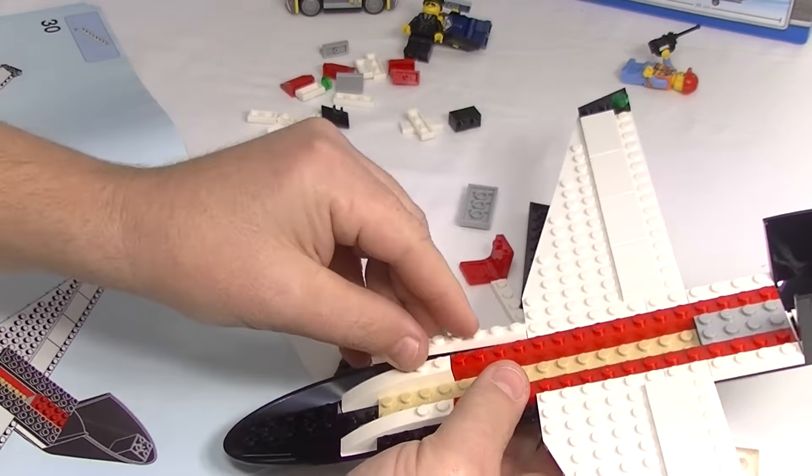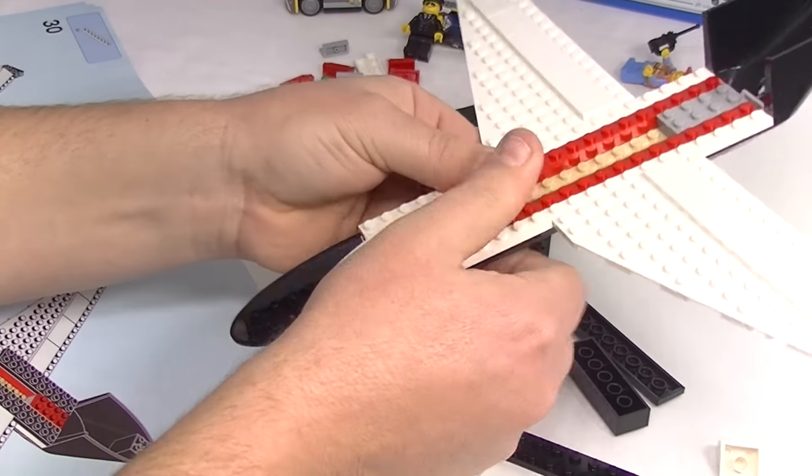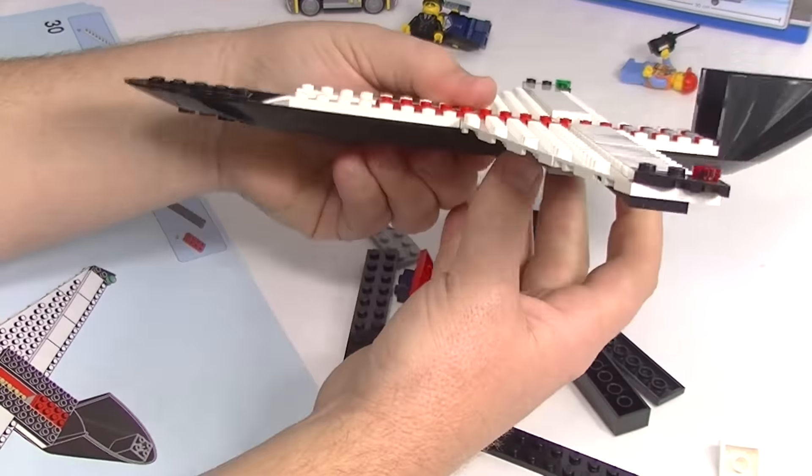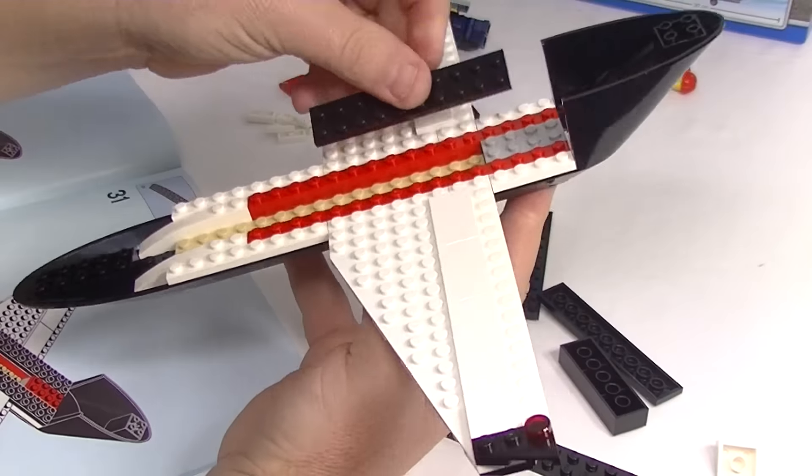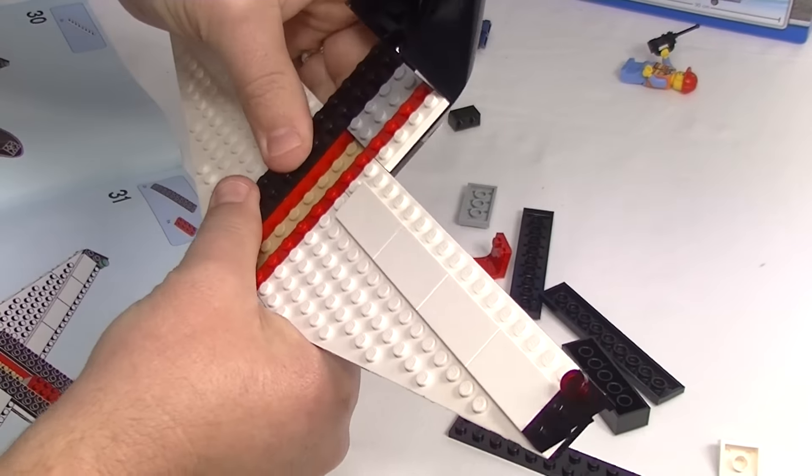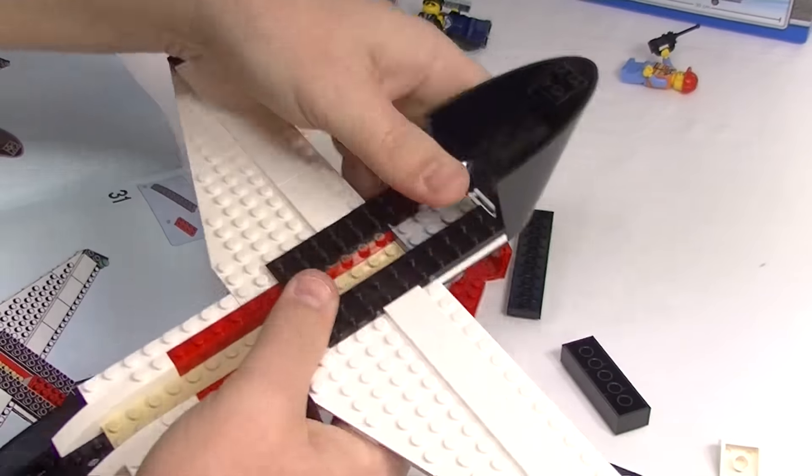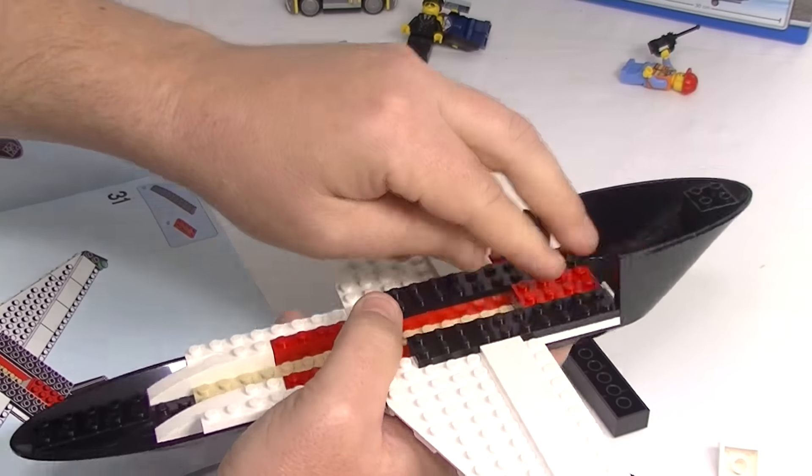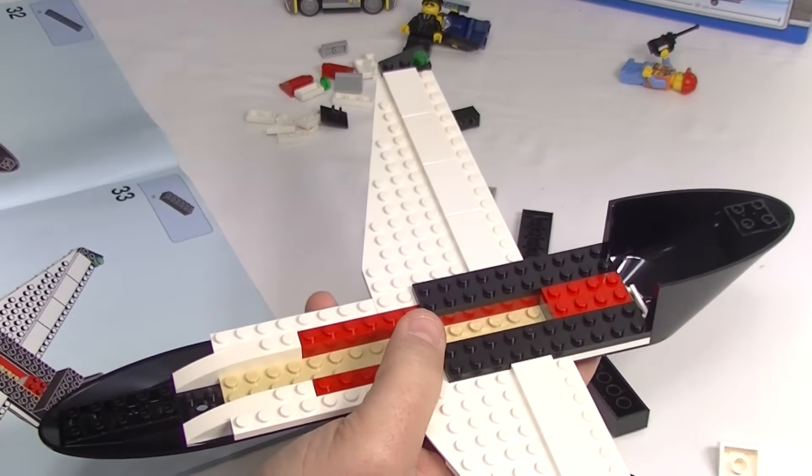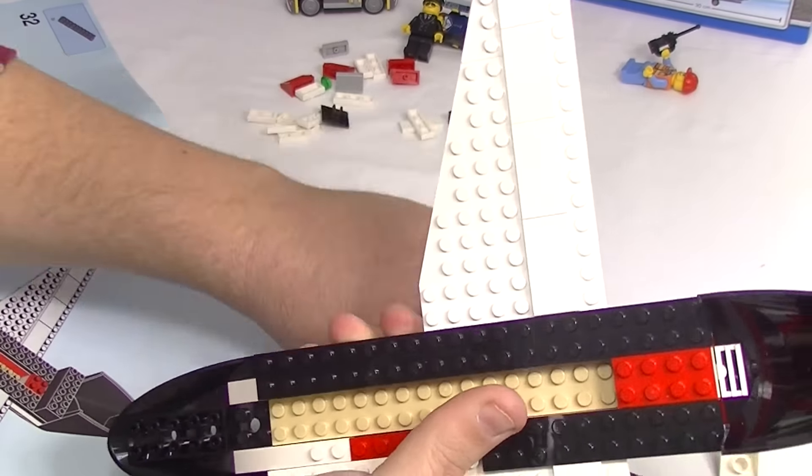I'm actually doing a collab with Aussie Bricks and he's got heaps of planes. If you haven't checked out Aussie Bricks, check his channel out. You'll see his city, he's got tons of planes. I thought it'd be cool to bring an extra plane for the show. Thought I'd put this together for you guys, we're going to have a look at it and then I'm going to pull it apart again so I can take it with me.